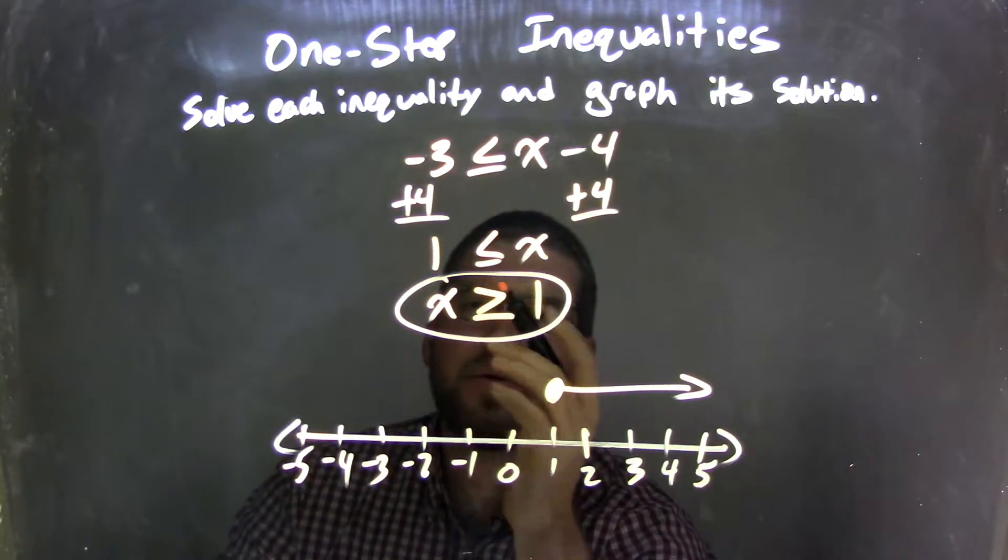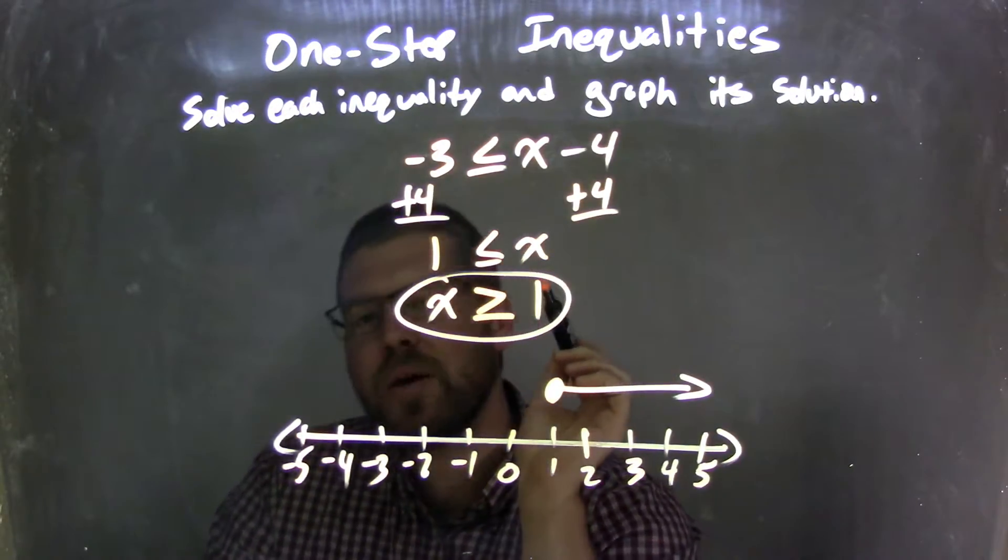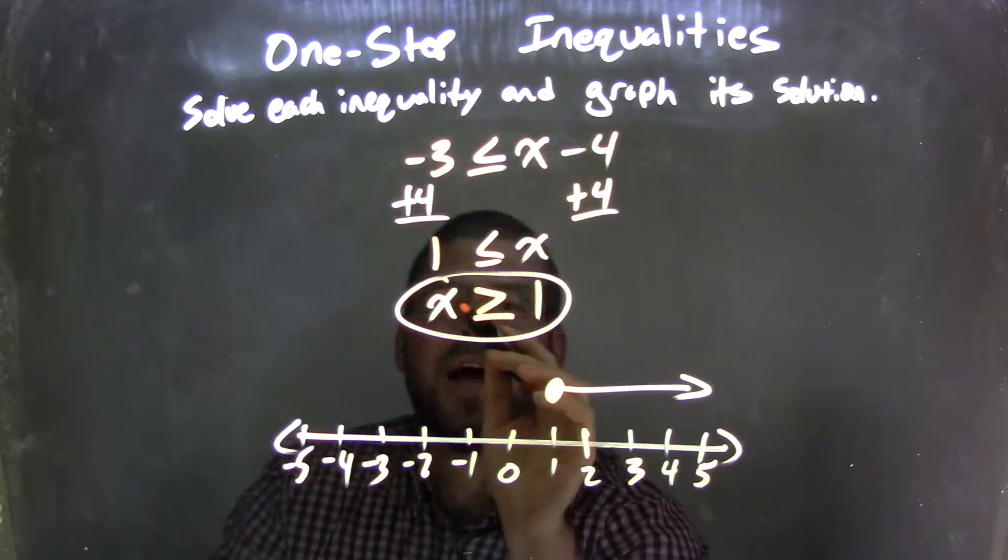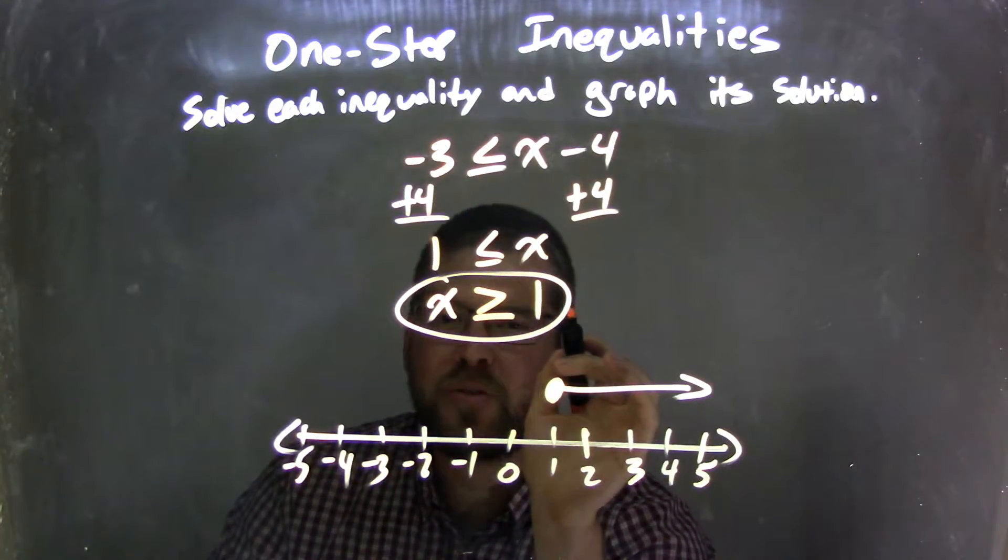which causes the inequality to flip, going from a less than or equal to sign to a greater than or equal to sign. So now we have x ≥ 1, and that is our final answer.